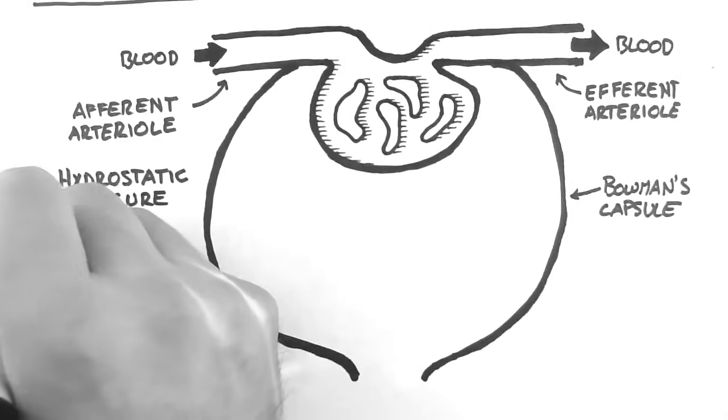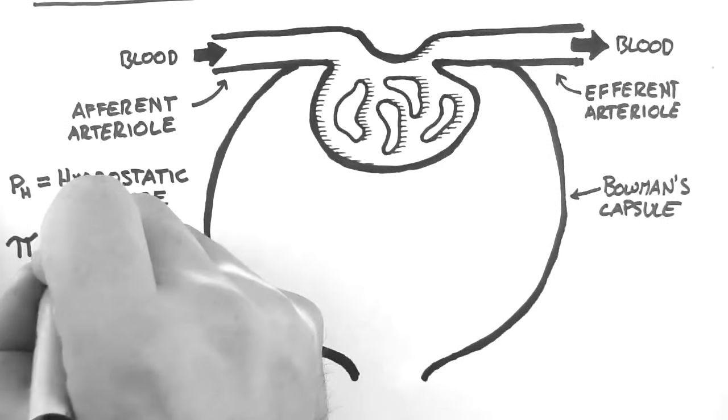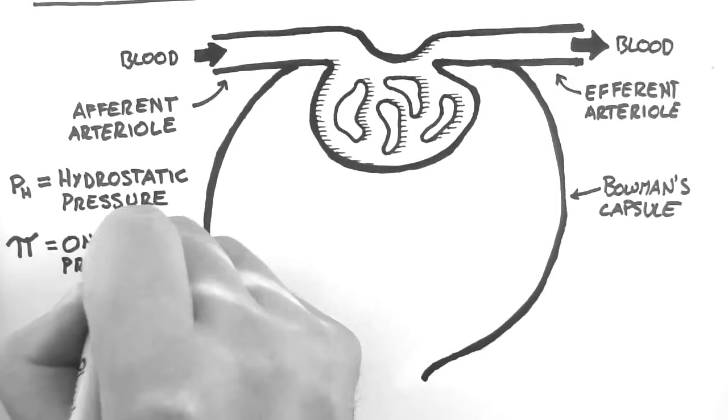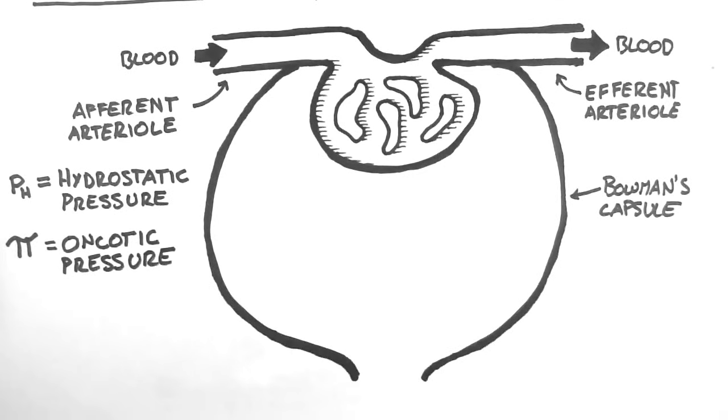The second important force here is the oncotic pressure, sometimes called the colloid oncotic pressure. This is usually denoted pi. This is a type of osmotic force, which is exerted on fluids by the presence of proteins in the blood and tissues.